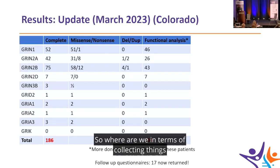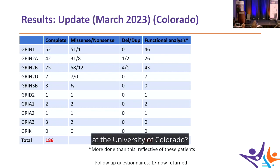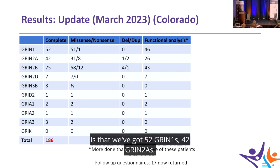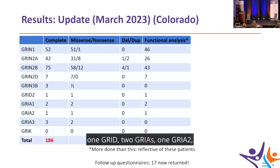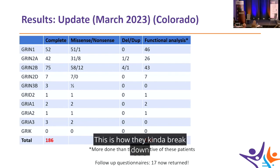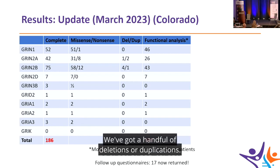In terms of our University of Colorado data: we have 52 GRIN1s, 42 GRIN2As, 75 GRIN2Bs, 7 GRIN2Ds, 3 GRIN3Bs, 1 GRID, 2 GRINs, 1 GRIN2, 3 GRIN3s, and no GRICs yet. This breaks down into missense and nonsense variants, with a handful of deletions or duplications. These are the ones overlapping with our group that have functional analysis — Steve noted there are about 650 total functional analyses done on patients.